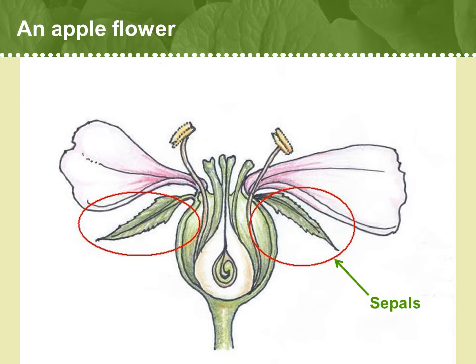You'll also see some leaf-like green sepals beneath the petals. Sepals often surround the developing flower bud, protecting the delicate petals as they first emerge.